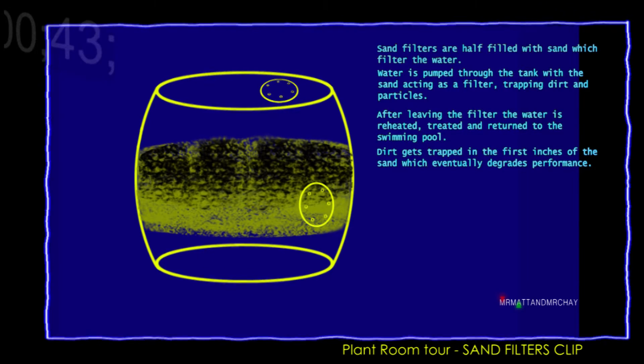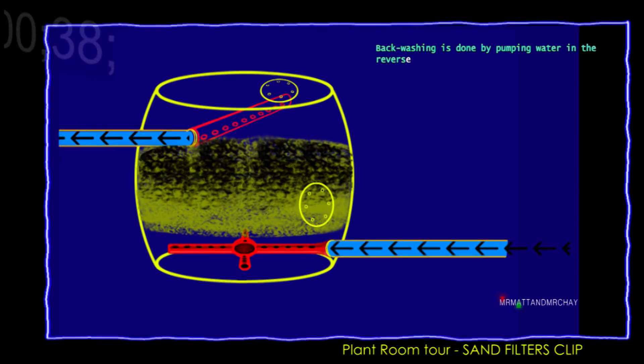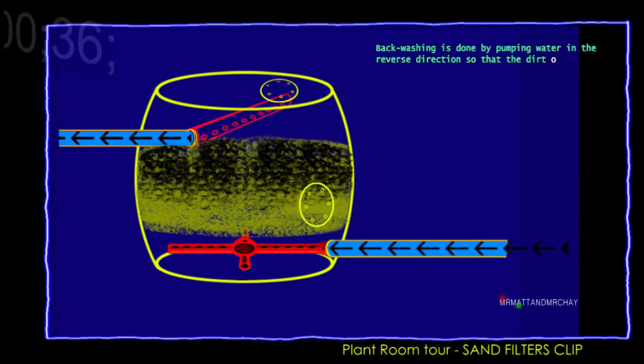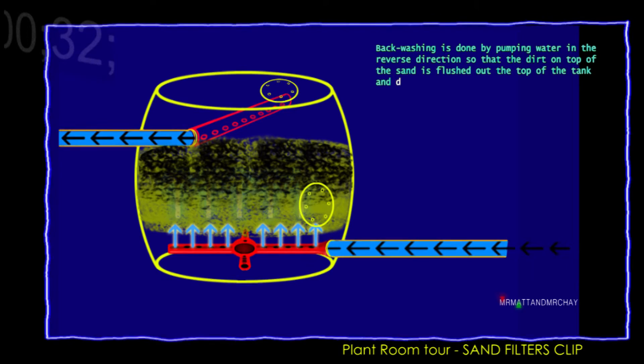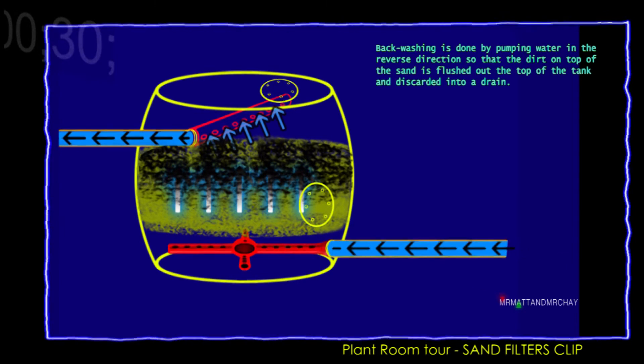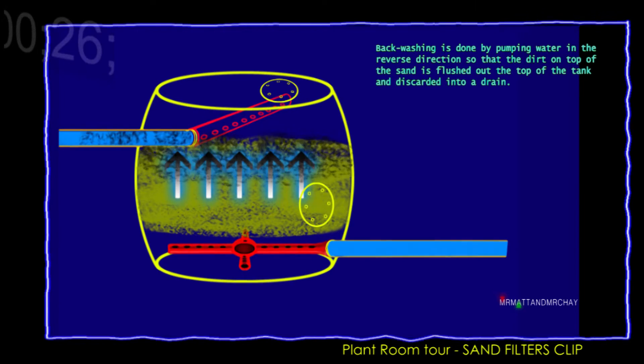To do this, a tank is isolated and backwashed by pumping water in the reverse direction from the bottom upwards, so the dirt on top of the sand is filtered out, taken into a drain, and discarded. This cleans the sand, which restores the performance of the filter.